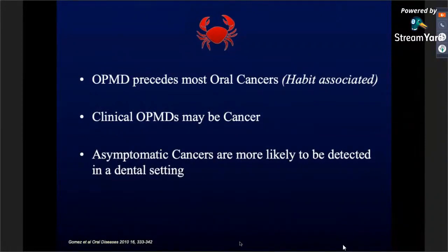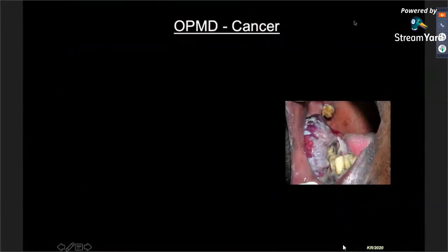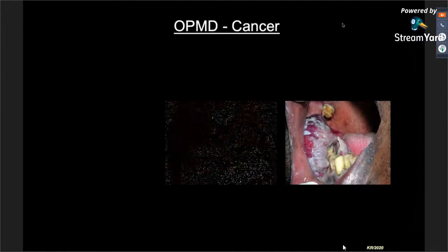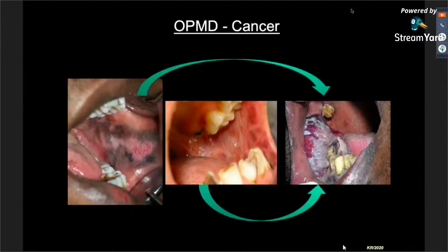Most symptomatic cancers are more likely to be diagnosed in the dental setting. These are the three important reasons why dental surgeons have a very important role in the preventive aspects of oral cancer. By the time a patient presents with a frank oral cancer lesion, it's already too late for conservative work. The whole idea is to catch them early — at the leukoplakia stage, the erythroplakia stage, or the oral submucous fibrosis stage before they become cancer.